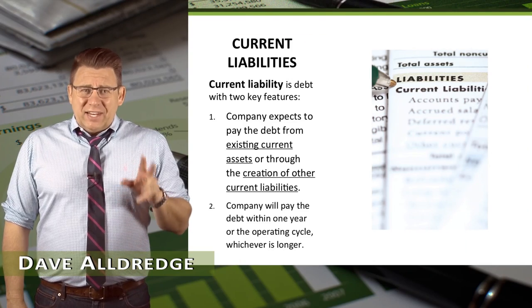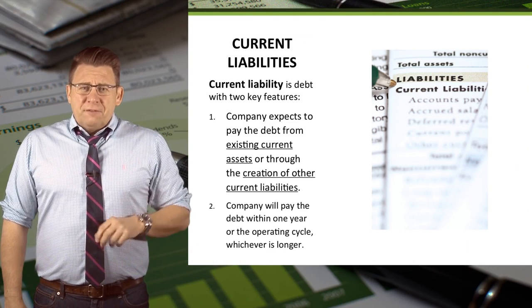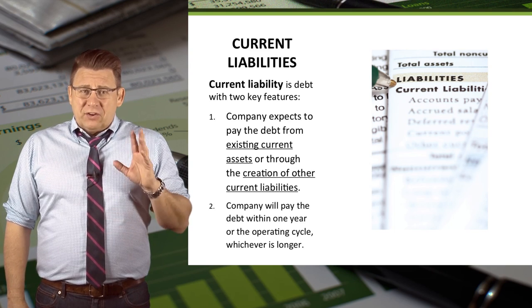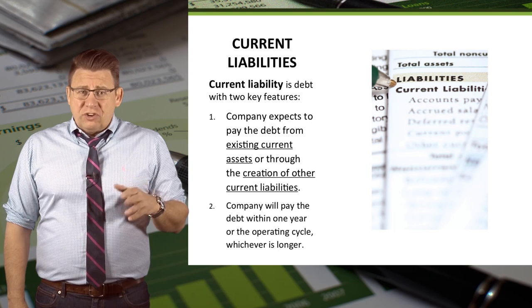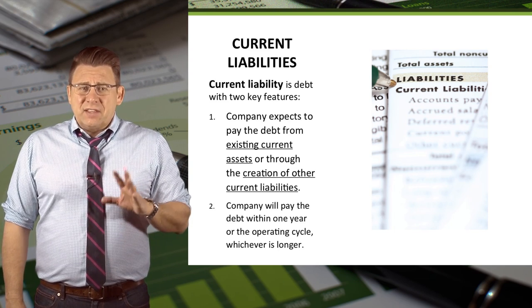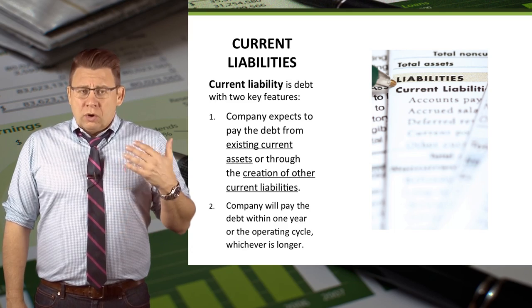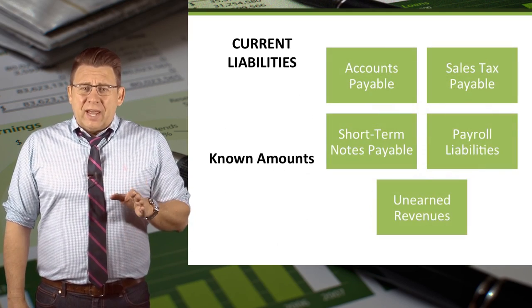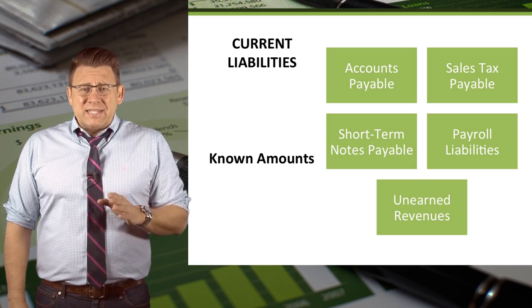Current liabilities are debt with two key features. The first is that a company expects to pay the debt from either existing assets or through the creation of other current liabilities. The second is that the company will pay the debt within one year or one operating cycle, whichever is longer. Current liabilities are either known amounts or estimated amounts.